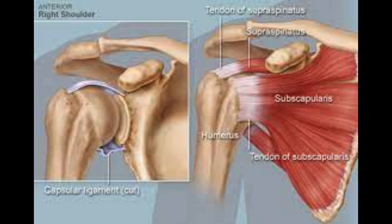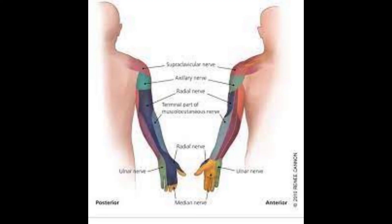5. Herniated circle. A herniated circle happens when the delicate core of the plate falls through a break in its external piece. A herniated circle can press against encompassing nerves, which might cause deadness or torment in the arm. Treatment choices incorporate agony prescription, active recuperation, and medical procedure.